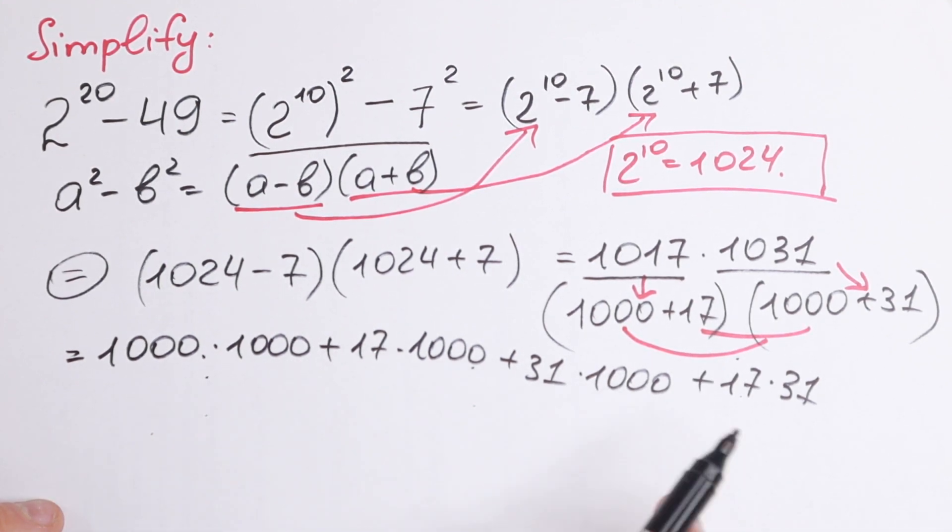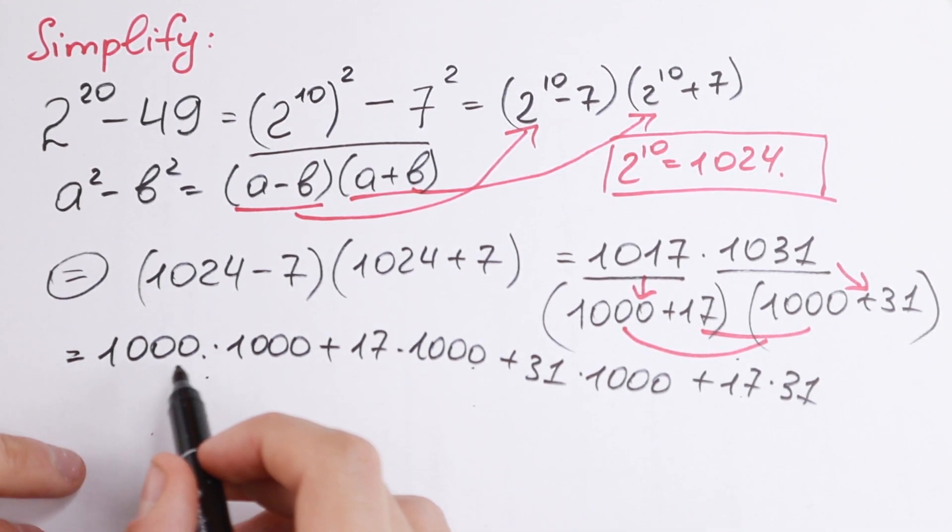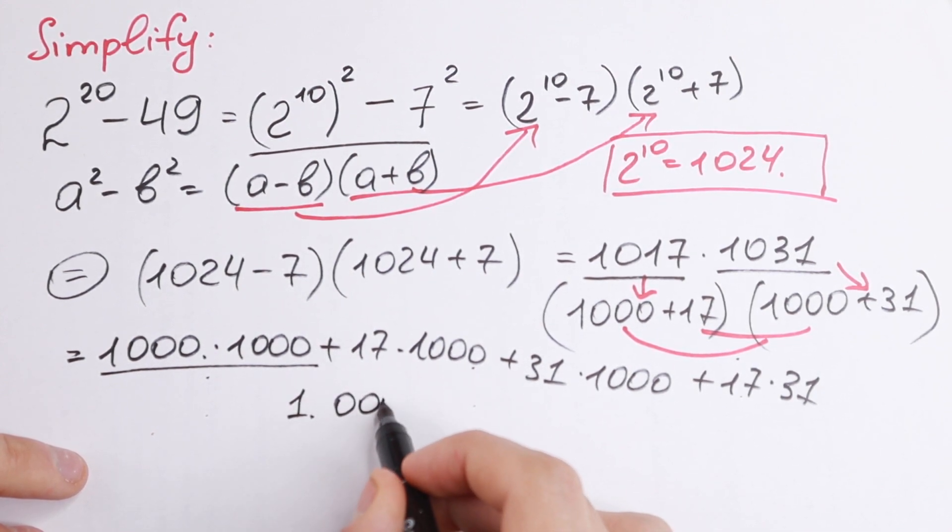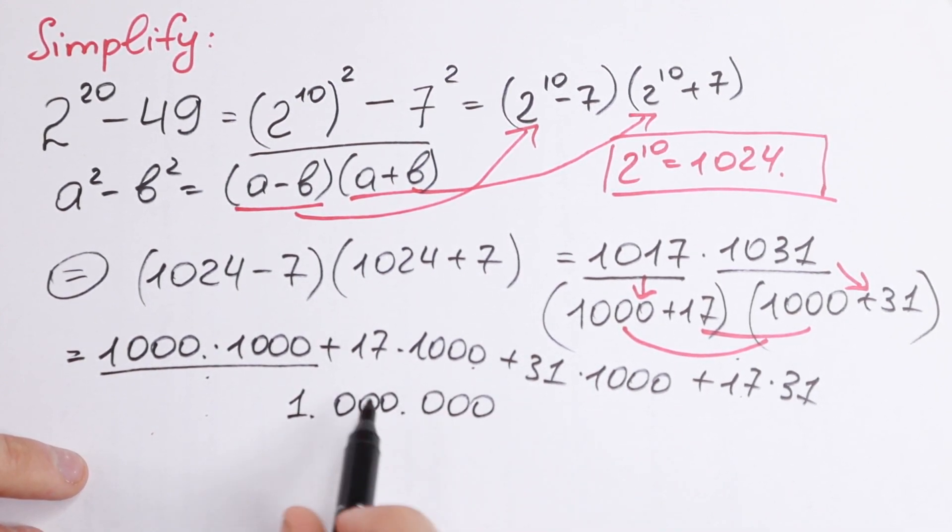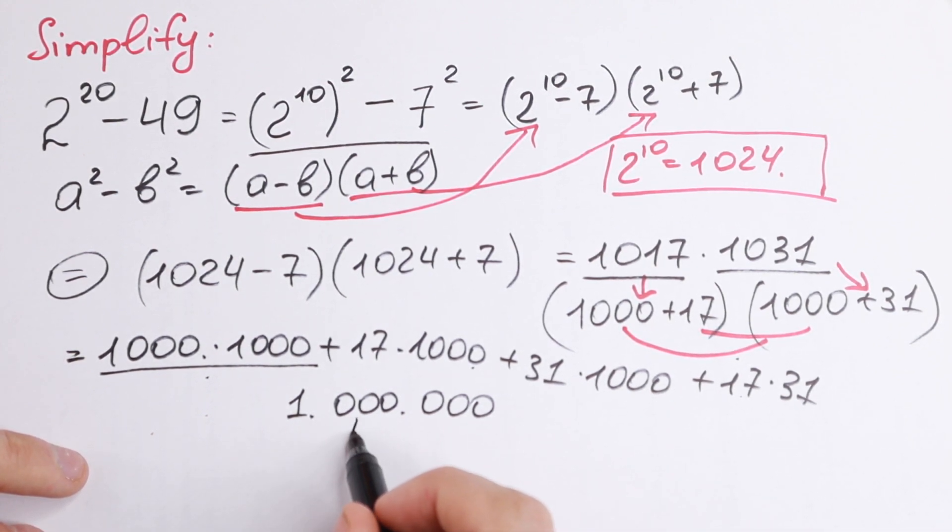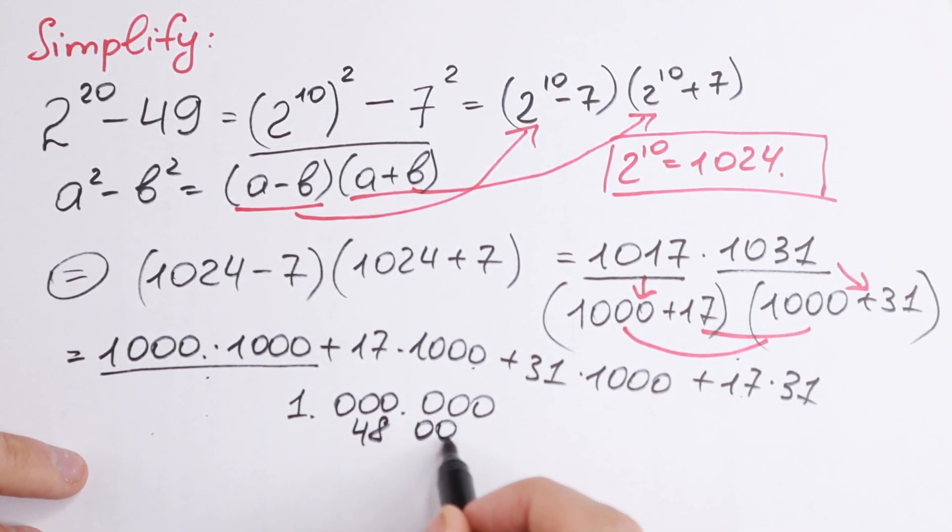So we just open parentheses and multiply it step by step. Take a look right here. 1000 times 1000 will be 1 million. So 1 million. Right here 17000 and 31000. If we add these, we will have 48000. And the last step 17 times 31 will be 527.